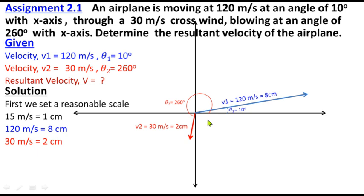These are your two vectors V1 and V2. Next, we have to take this vector and apply the head-to-tail rule. The head of one is at the tail of the other. This vector at 260 degrees, 2 centimeters, we position here. Now we join the tail to the other head and measure.